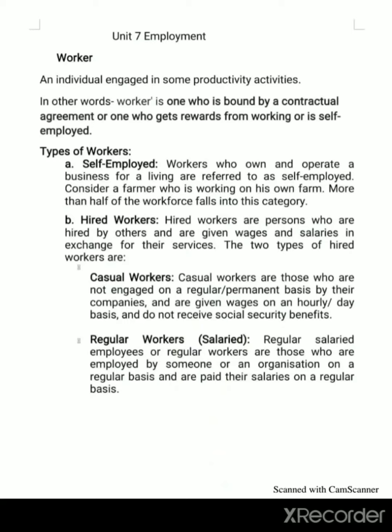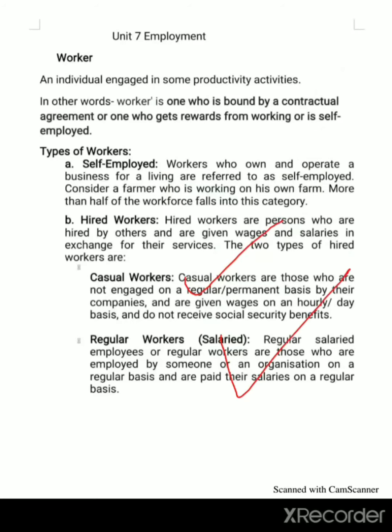To summarize the types of workers: self-employed, hired workers, and hired workers further divide into two types — casual workers and regular workers.